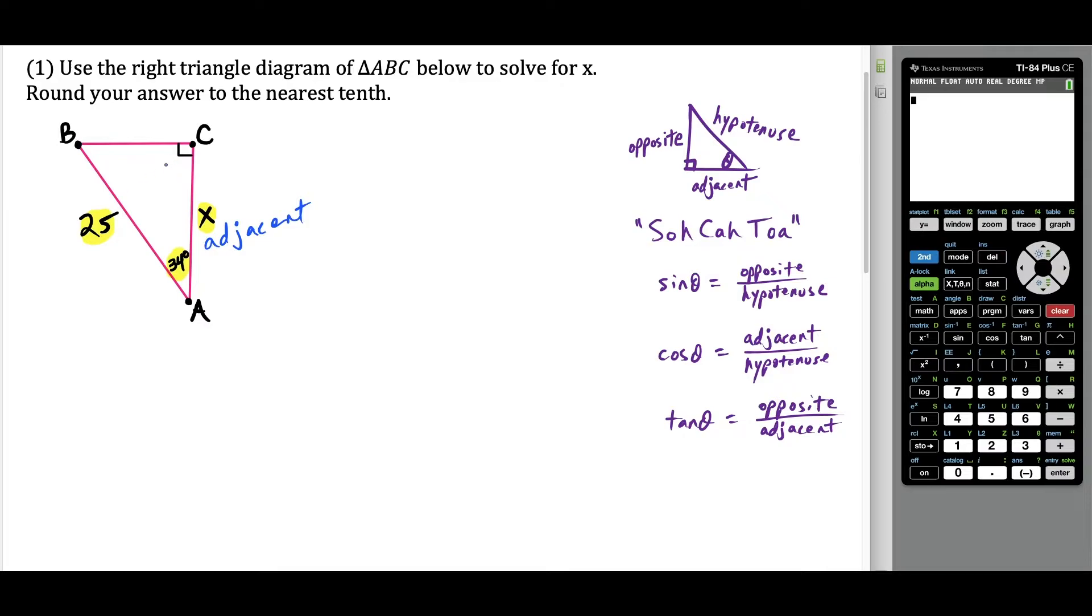Now 25 is the hypotenuse because it's across from the right angle. So I know this side over here, side AB, represents the hypotenuse of this right triangle. And this side BC is opposite of the 34 degree angle. So this is how I would label this. And once again, as you get good at this, you kind of just do this in your head.